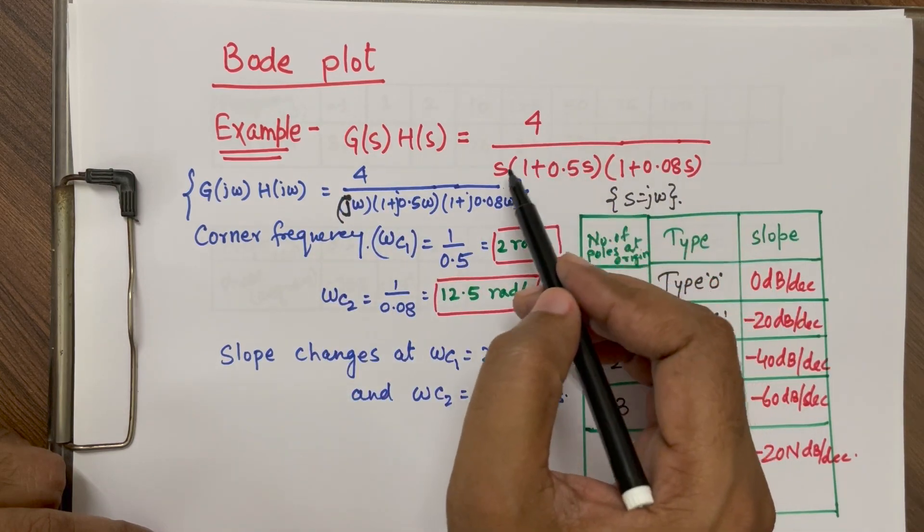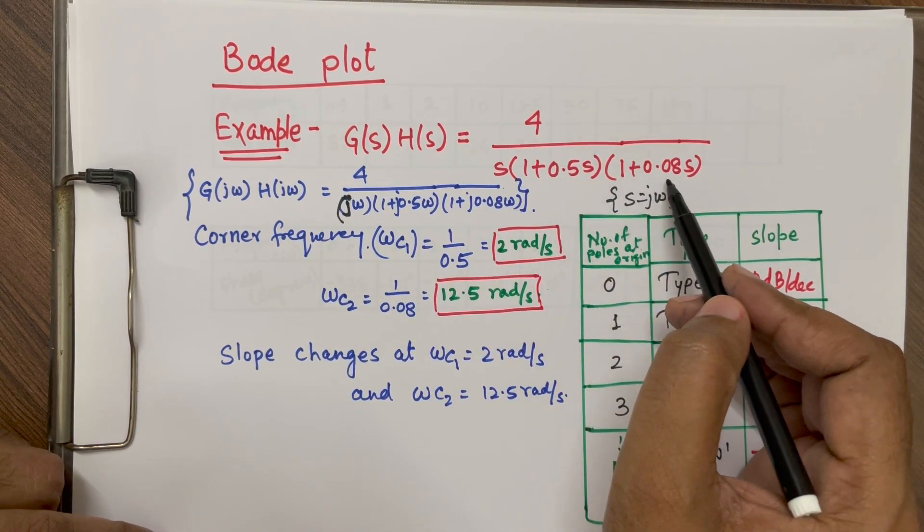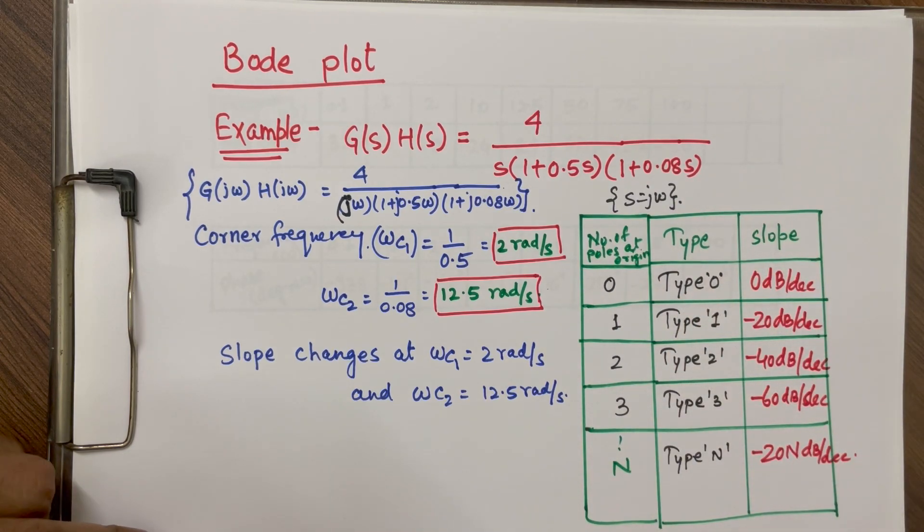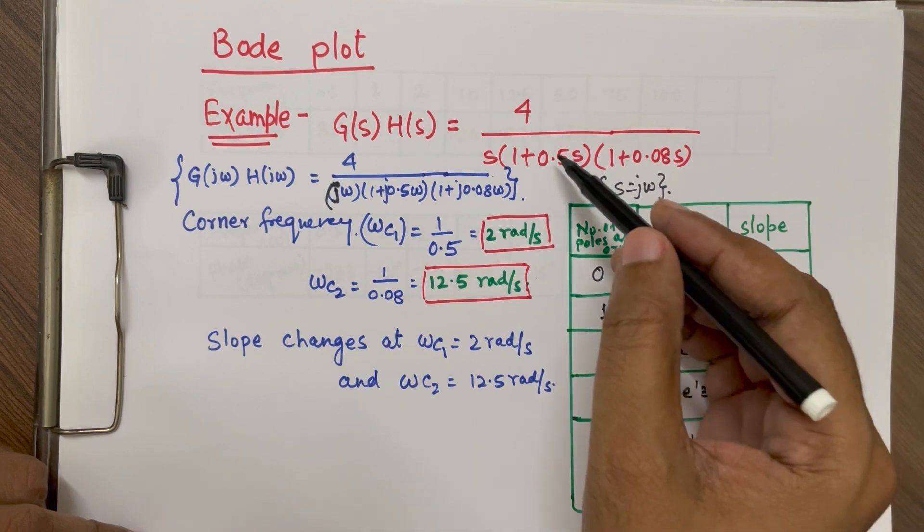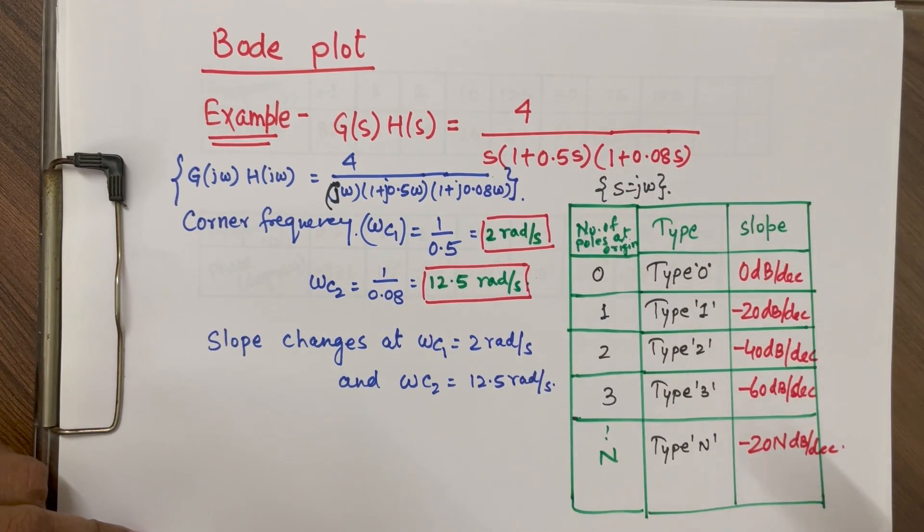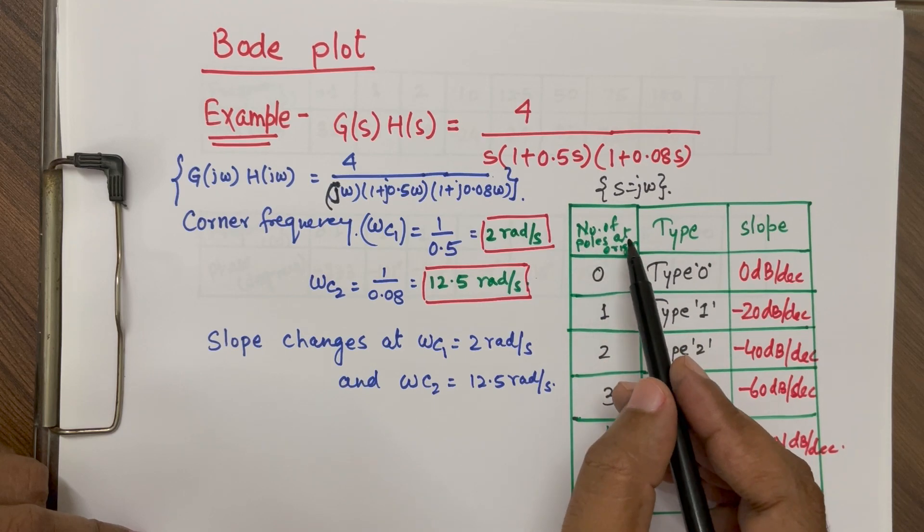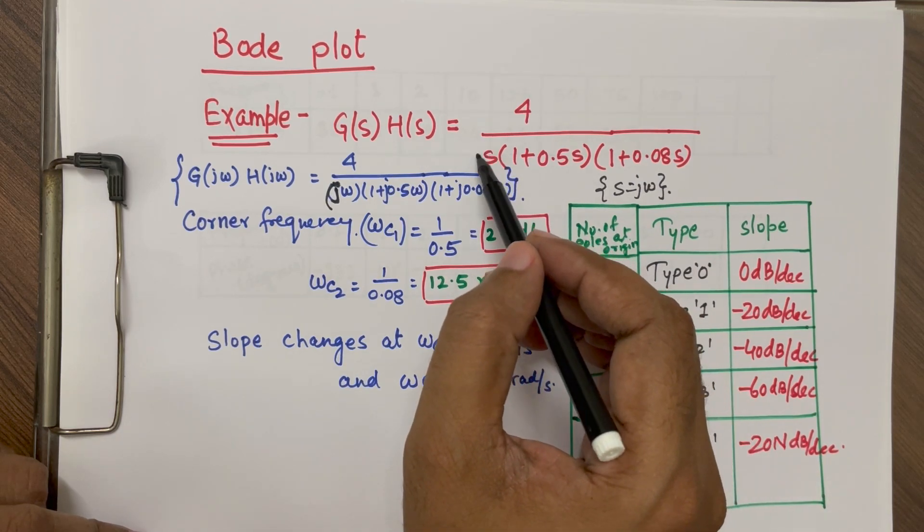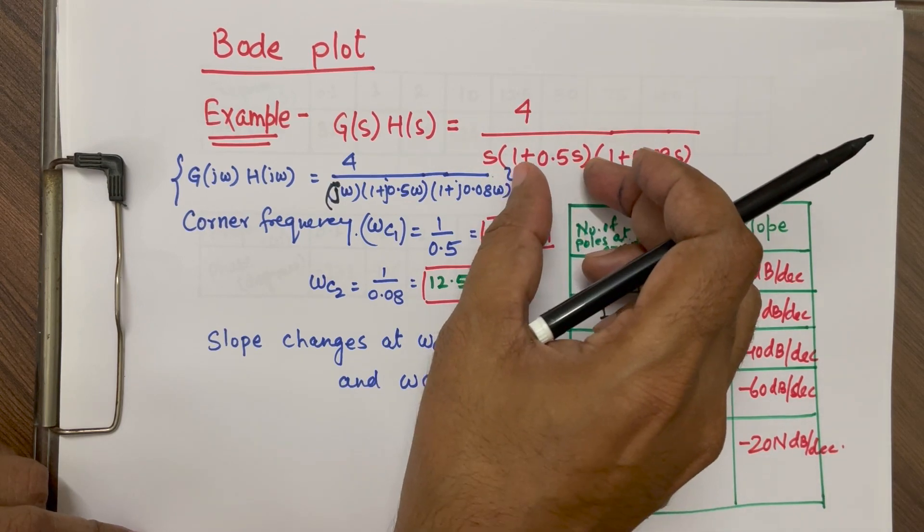So this example is 4 by s into 1 plus 0.5 s into 1 plus 0.08 s. So first of all we have to identify which type of system it is. So depending upon the number of poles at origin, in this case there is only one pole at the origin. Other poles are at some other place.